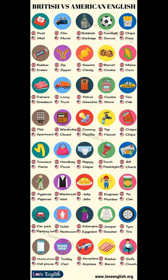Learn the difference between American English vs British English. Post / Mail. Film / Movie. Rubbish / Garbage. Football / Soccer. Chips / Fries. Rubber / Eraser. Zip / Zipper. Sweets / Candy. Biscuit / Cookie. Maize / Corn.